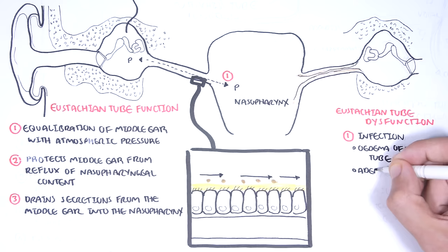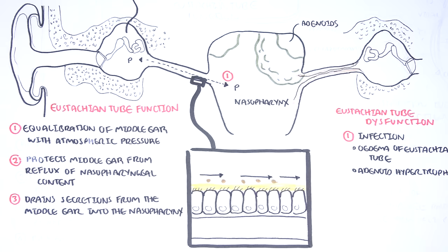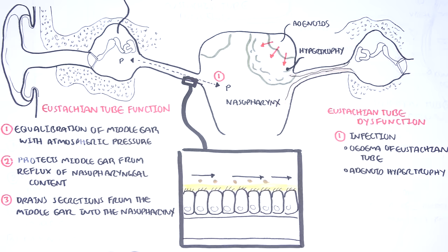Similarly, adenoid hypertrophy from an infection can block eustachian tube drainage and disrupt pressure equalization, resulting in negative pressure in the middle ear.